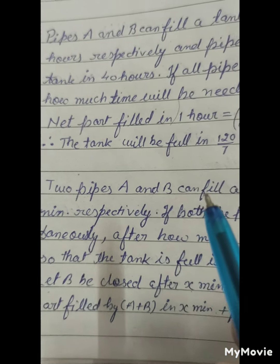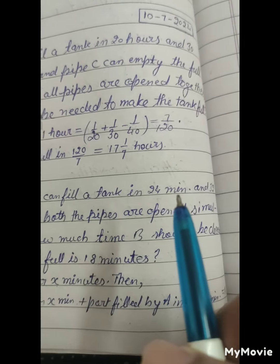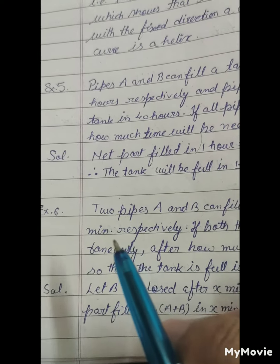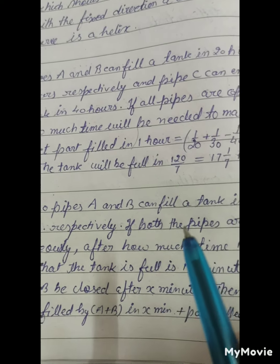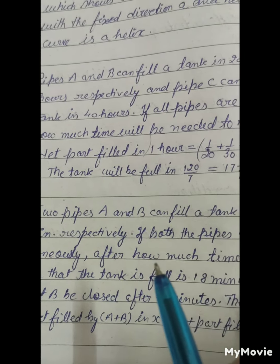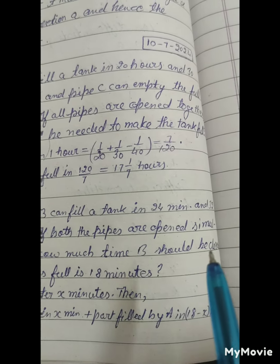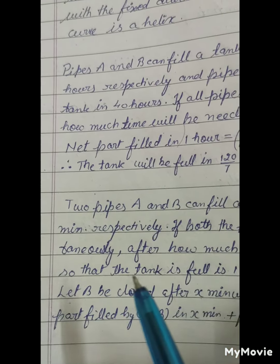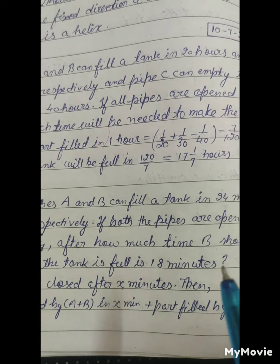Two pipes A and B can fill a tank in 24 minutes and 32 minutes respectively. If both the pipes are opened simultaneously, after how much time B should be closed so that the tank is full in 18 minutes?